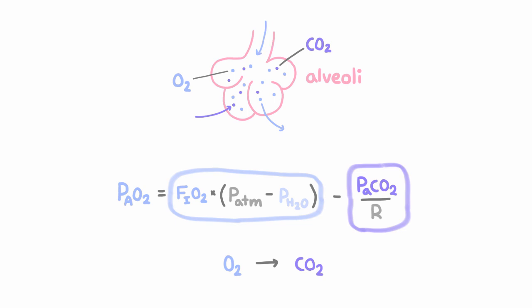So that means if we know the alveolar CO2, then we know how much O2 was consumed. But this term here has a little a, so it's referring to arterial CO2 and not alveolar CO2. So what's the deal with that?